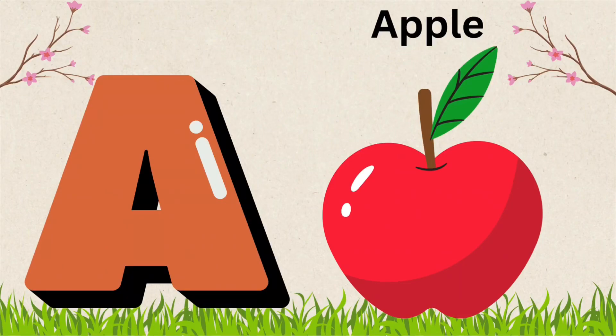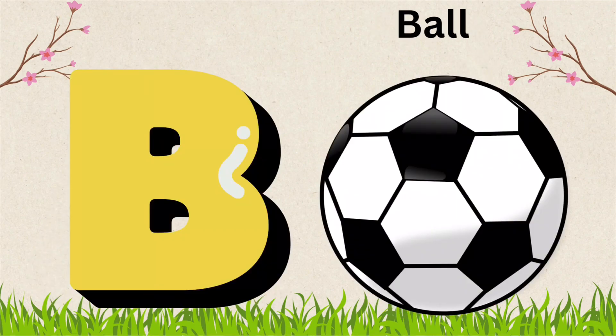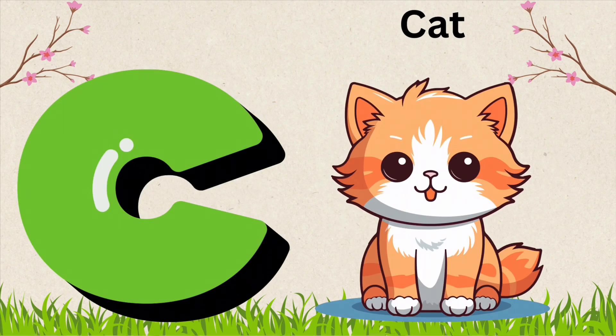A is for Apple. A, double P, L, E, Apple. B is for Ball. B, A, double L, Ball. C is for Cat. C, A, T, Cat.